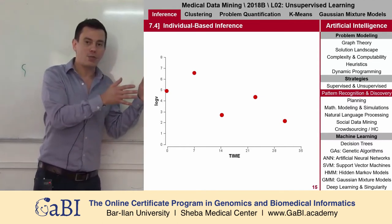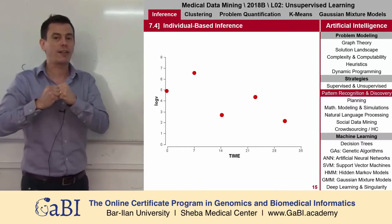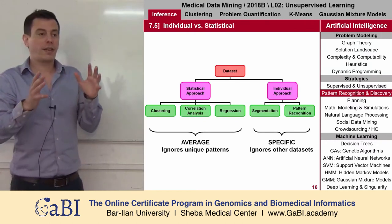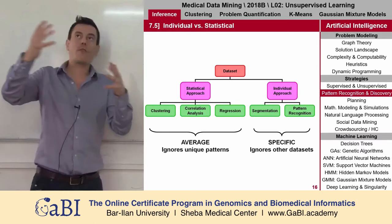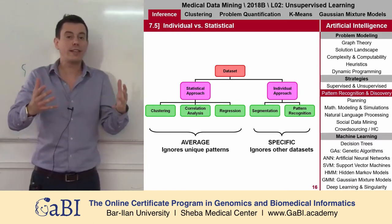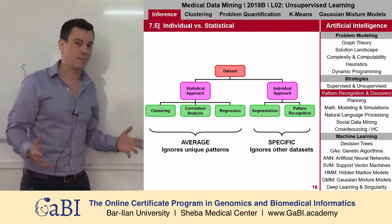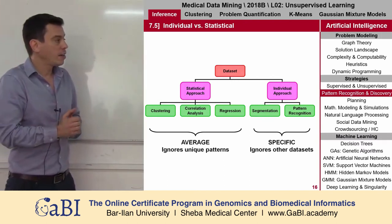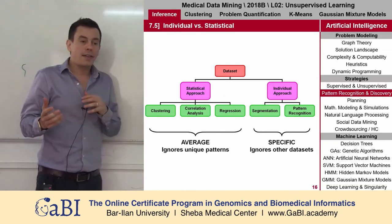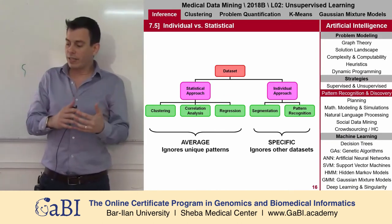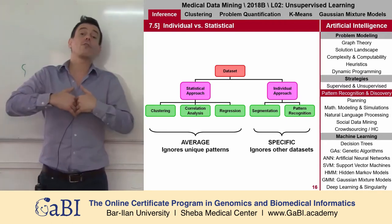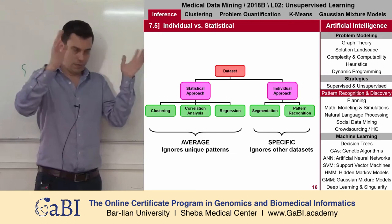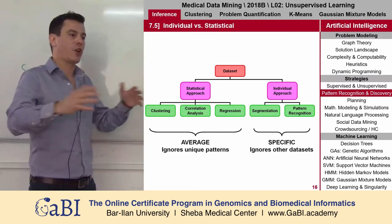The data is one thing; the information we can derive from the data is something else. The different ways of making information out of data can be split into two main disciplines. There's the statistical approach, which looks at populations — it looks at all the data, which is good — but it does something like an average, very roughly speaking. Statistics does an average on all populations.